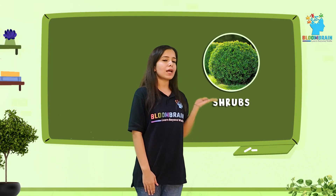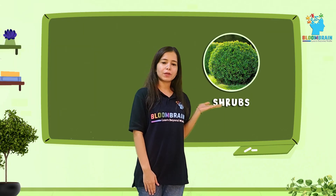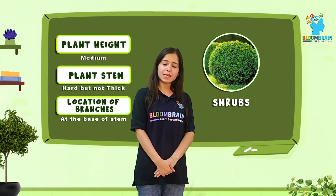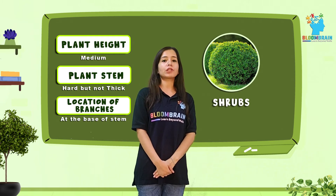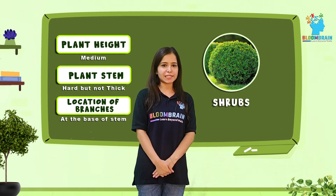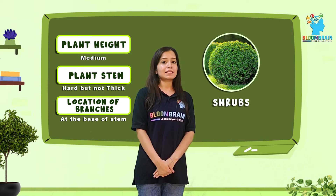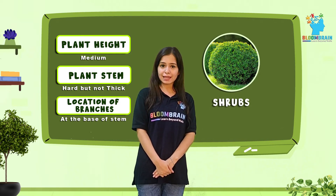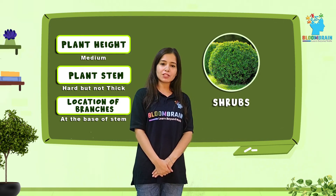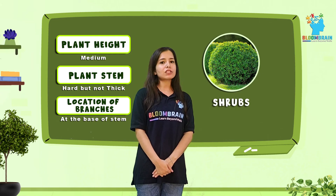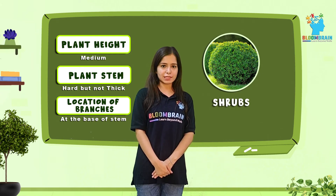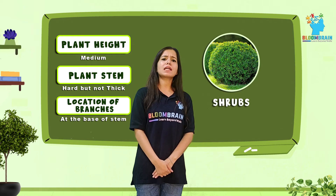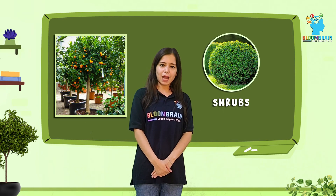In the case of shrubs, the plant height is above your height — that is, medium height. The plant stem is hard but not thick. And the location of branches — branches are present at the base of the stem, that is, almost at the lower part of the stem. For example, lemon plant.